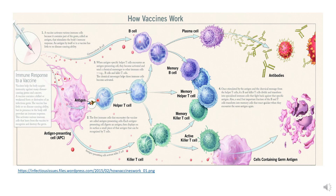This helper T cell then secretes cytokines or molecules that attract all kinds of other cells. One of the many cells it attracts is a B cell, and a B cell then interacts with this helper T cell and gets activated.